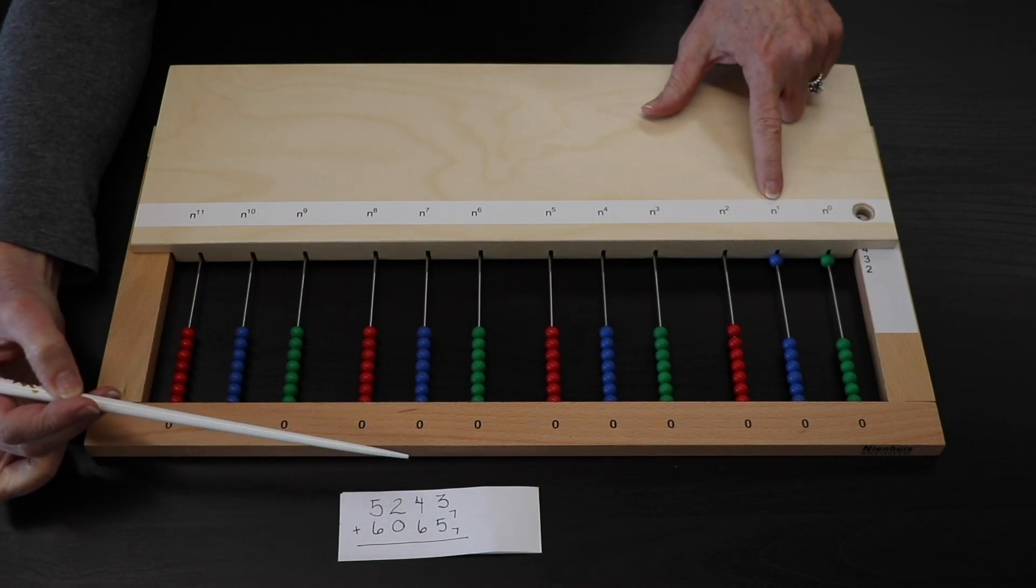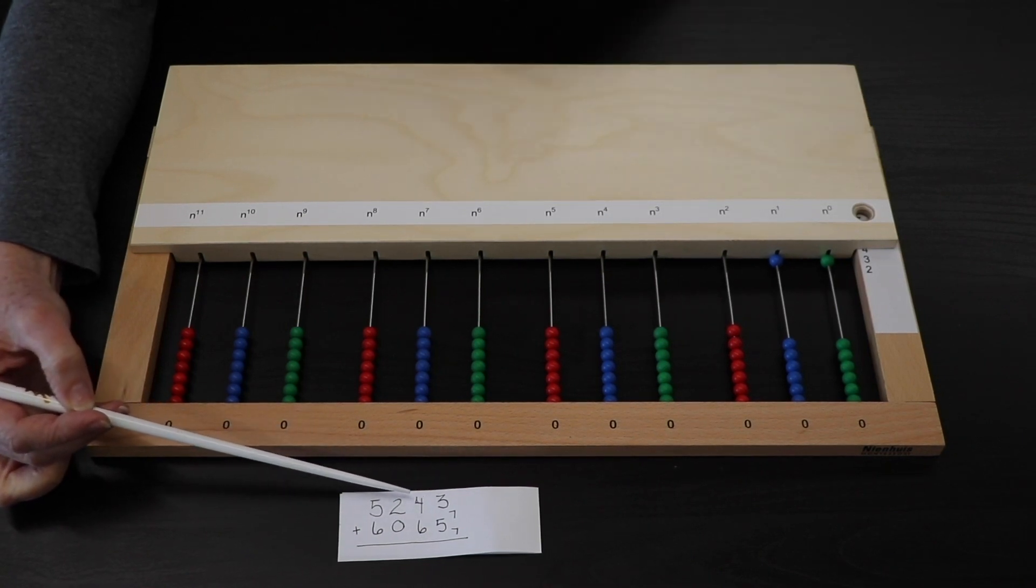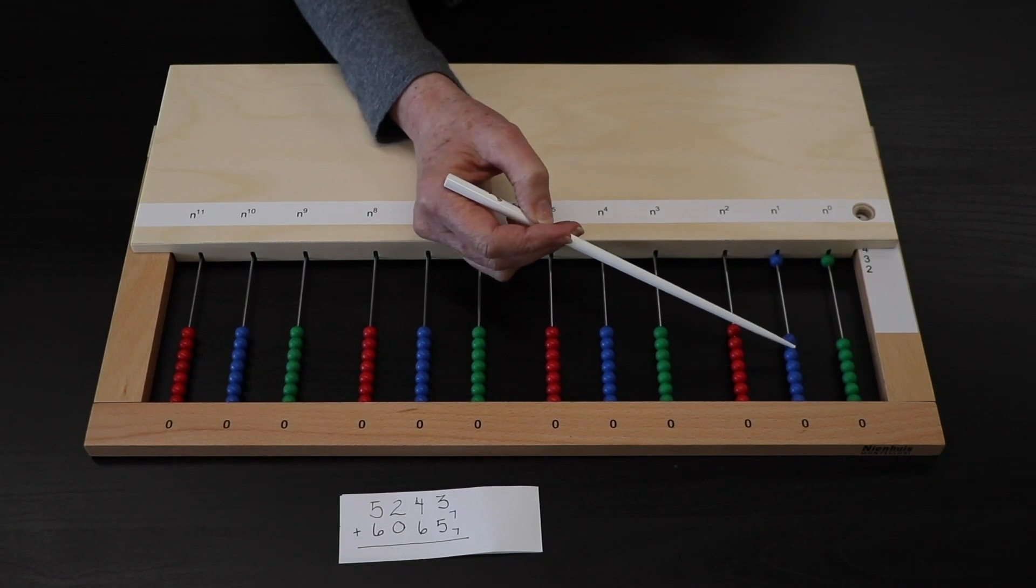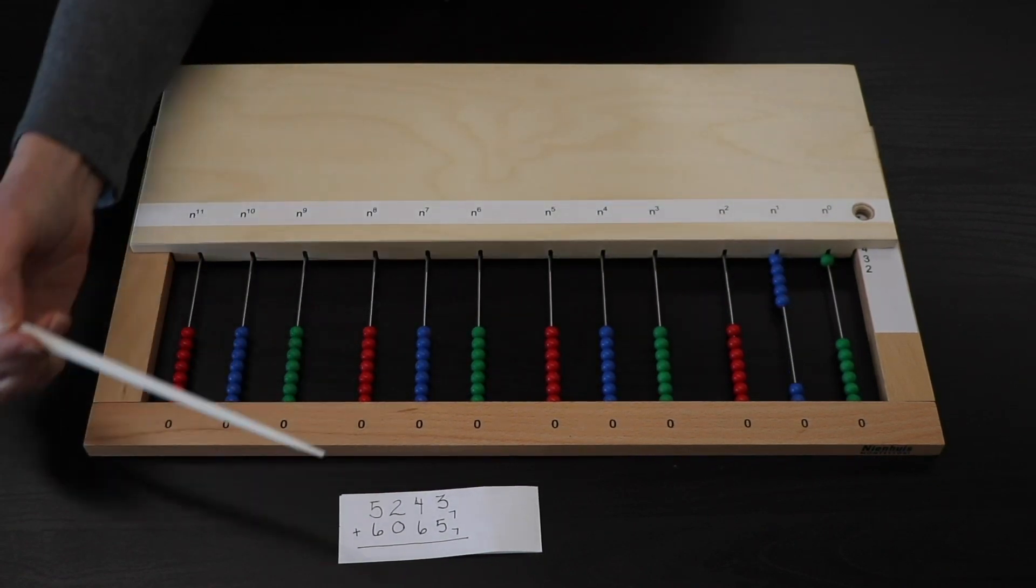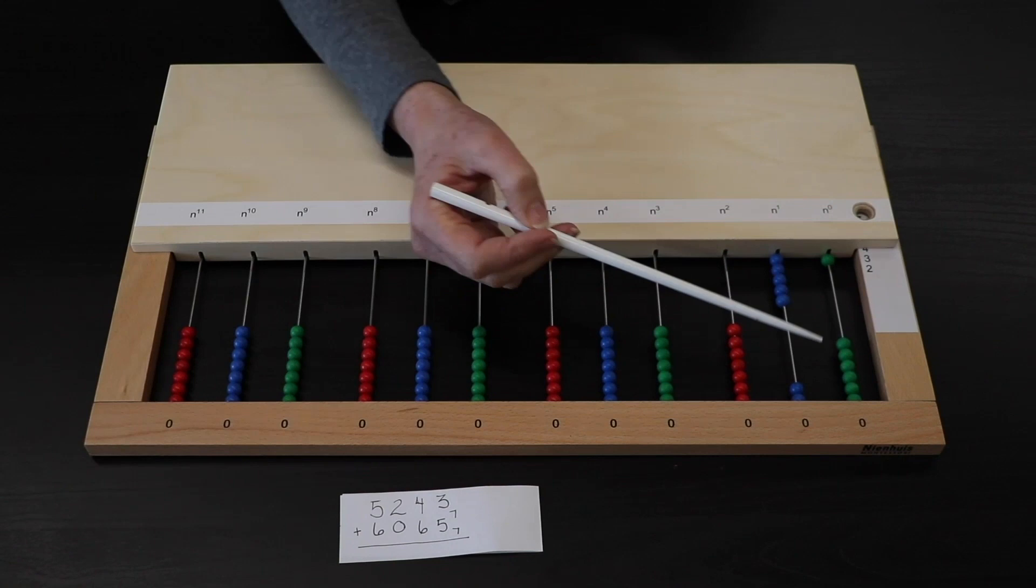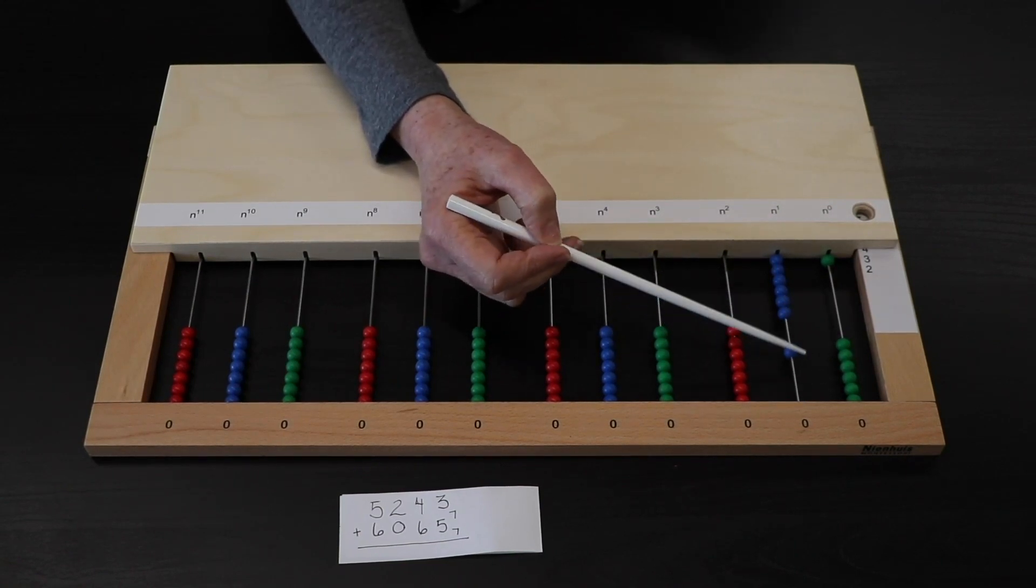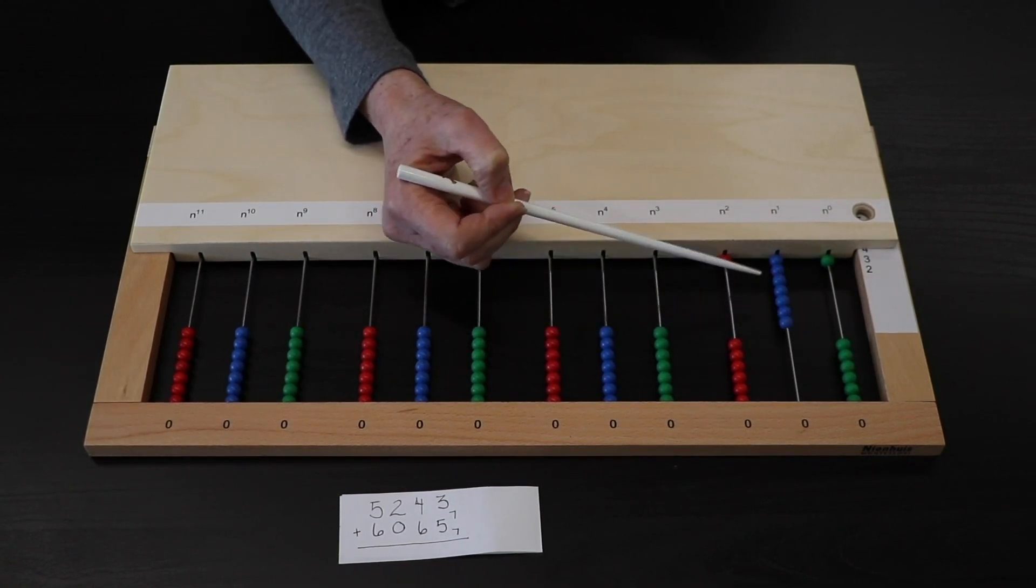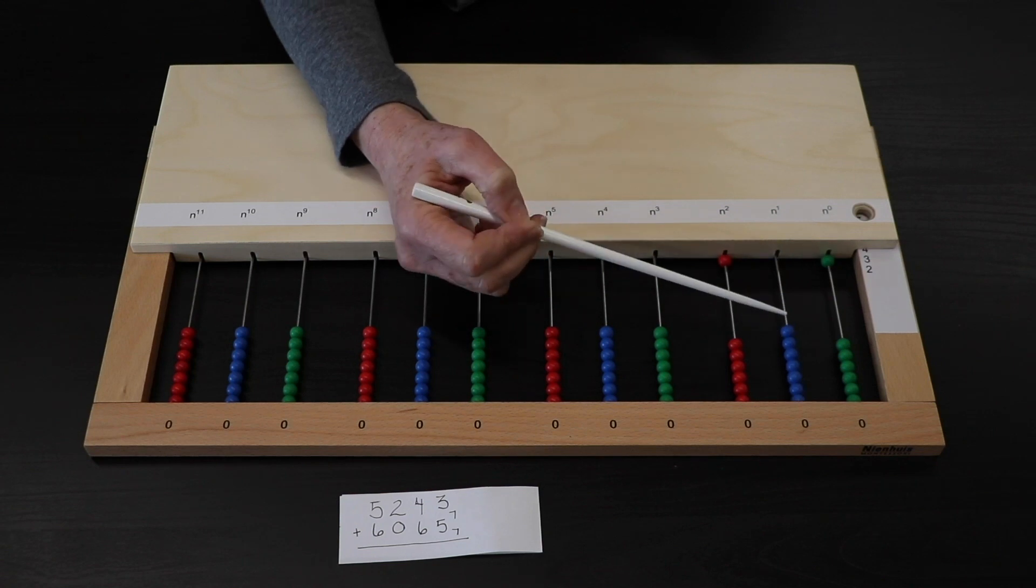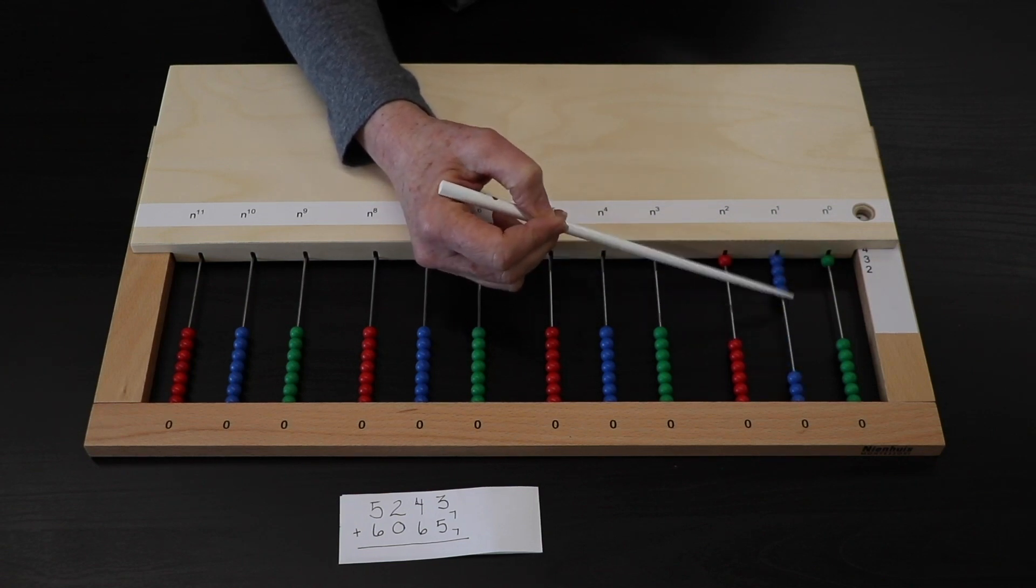In my 7 to the first, I'm going to put in 4, 1, 2, 3, 4, and then I need to add 6 more. 1, 2, exchange, 3, 4, 5, 6.